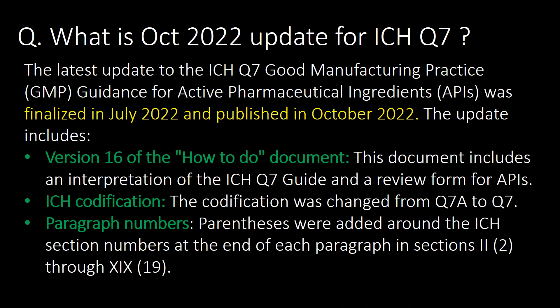What is the October 2022 update for ICH Q7? The latest update to the ICH Q7, i.e., Good Manufacturing Practice guidance for Active Pharmaceutical Ingredients (APIs), was finalized in July 2022 and published in October 2022. The update includes version 16 of the how-to-do document, ICH codification, and paragraph numbers.